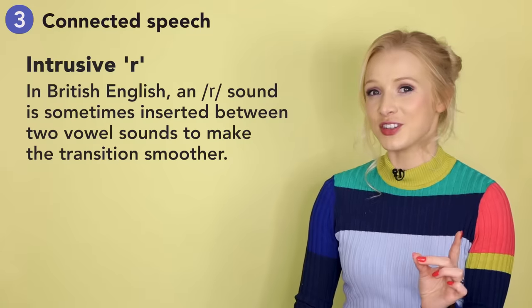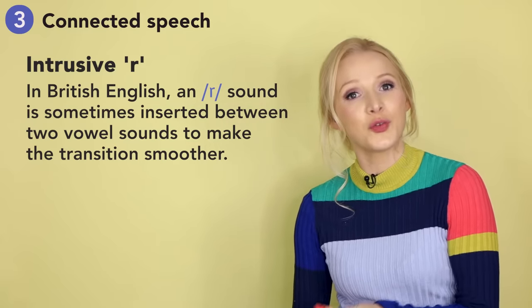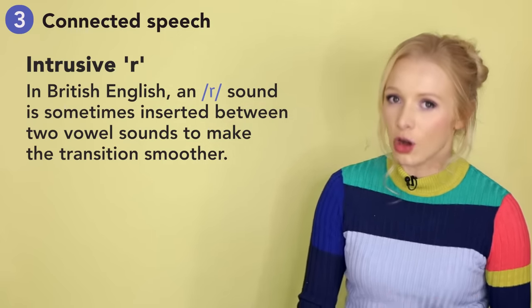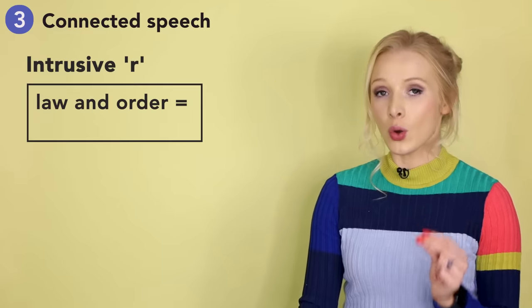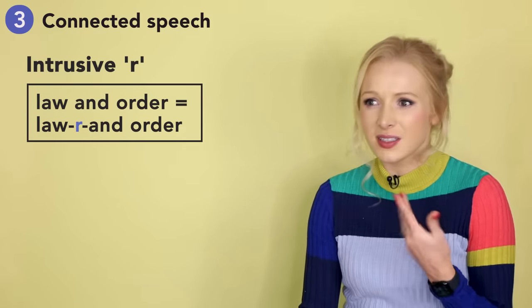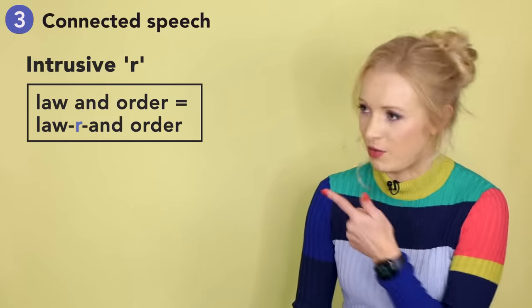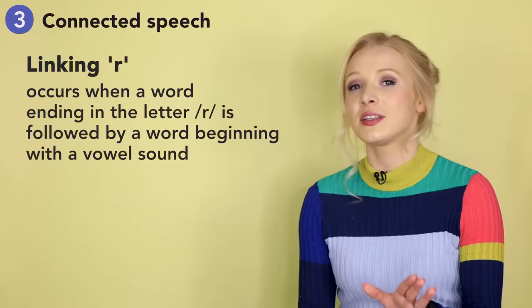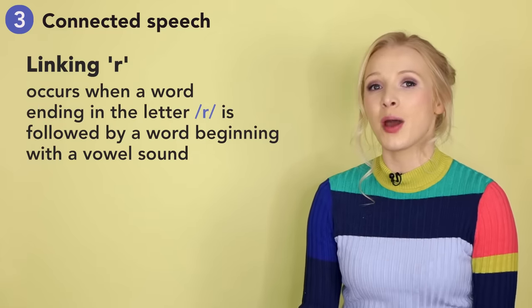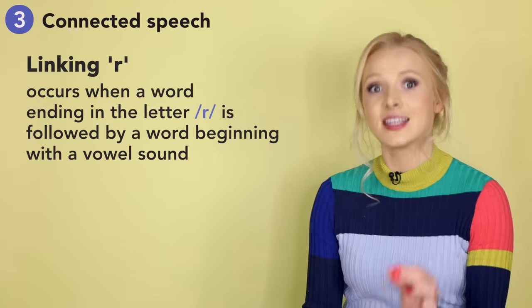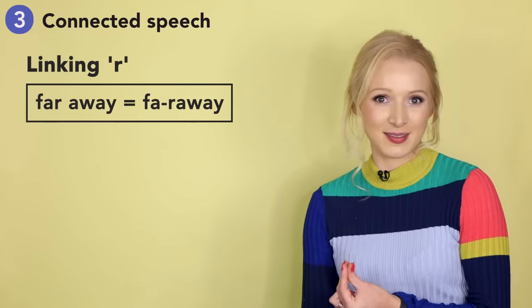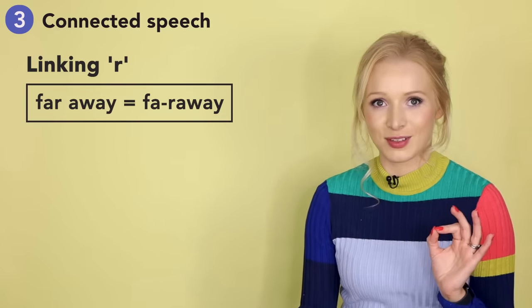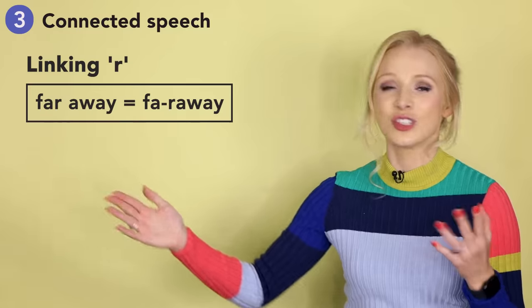Now this one is really fun — the intrusive r. In British English, an r sound is sometimes inserted between two vowel sounds to make the transition smoother. This is particularly common in non-rhotic accents such as received pronunciation — my accent. For example, 'law and order' may be pronounced as 'lawr and order.' We also have the linking r, which occurs when a word ending in the letter r is followed by a word beginning with a vowel sound. For example, 'far away' becomes 'far-r-away' — it's just natural to put it in there.